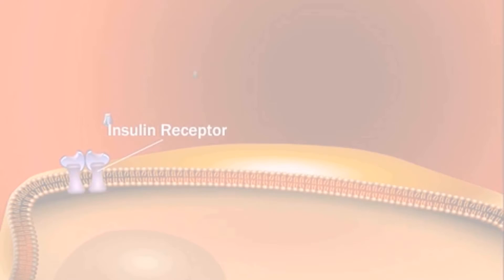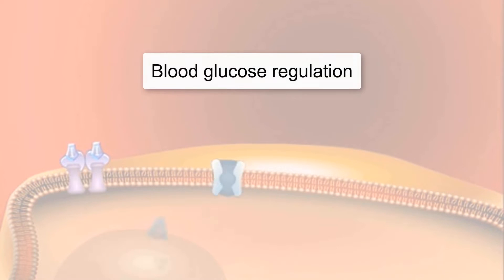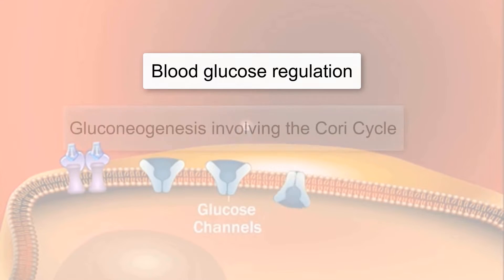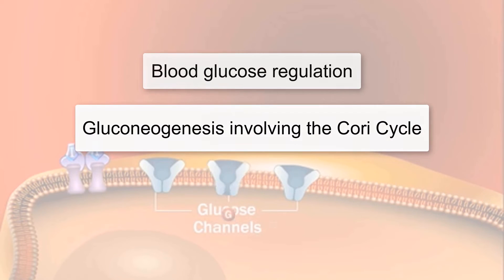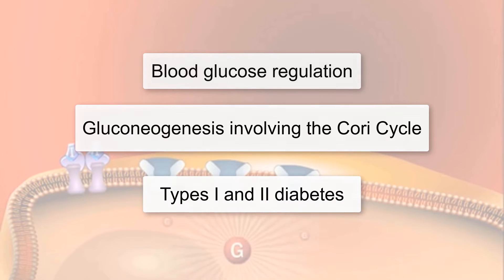The four steps in this video will cover blood glucose regulation, including blood lactate, gluconeogenesis involving the Cori cycle, and both types 1 and 2 diabetes.